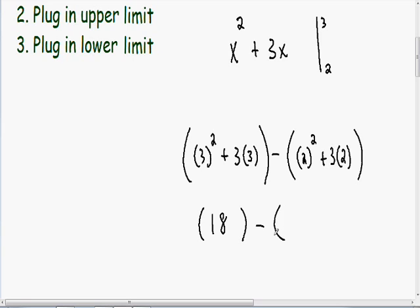In our second parentheses we have 2 squared which is 4 plus 3 times 2 which is 6. 4 plus 6 is 10. And of course 18 minus 10 is just 8. And this is our final answer.